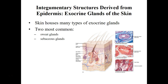Our skin also has different exocrine glands — glands that release chemicals to the surface or to the opening of a lumen. The two types we focus on are sweat glands and sebaceous glands. Sweat glands, also known as sudoriferous glands, secrete sweat in response to increased body heat. Sweat can also be released due to stress. Sebaceous glands are our oil glands.